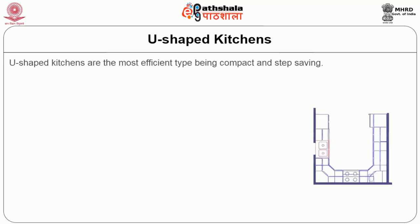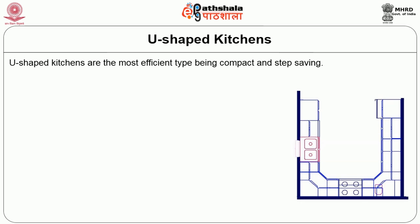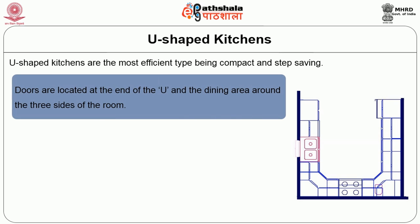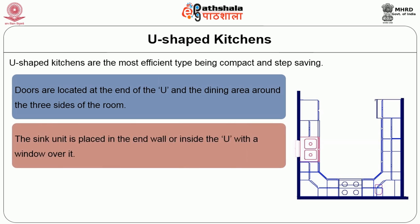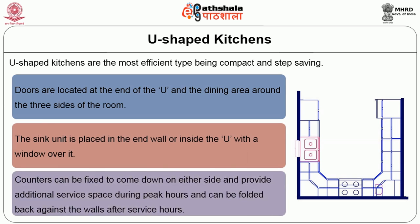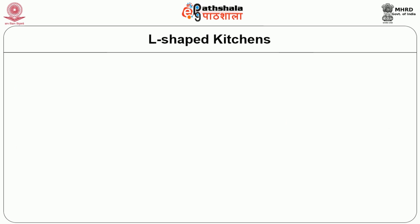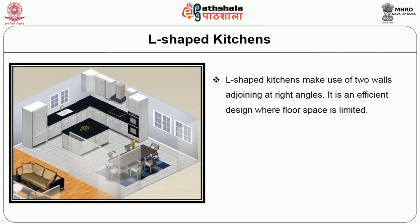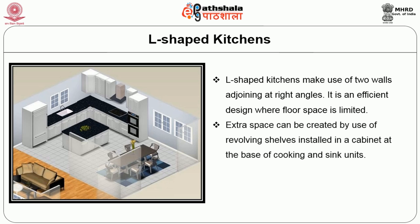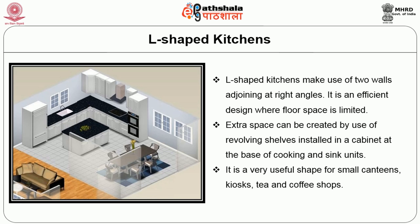U-shaped kitchens are the most efficient type, being compact and step-saving. Doors are located at the end of the U and the dining area is around the three sides of the room. The sink unit is placed in the end wall or inside the U with the window over it. Counters can be folded back against the walls after service hours. L-shaped kitchens make use of two walls adjoining at right angles and are an efficient design where floor space is limited. Extra space can be created by use of revolving shelves, and this shape is very useful for small canteens, kiosks, and tea and coffee shops.